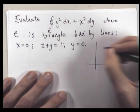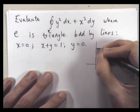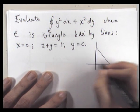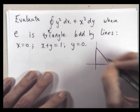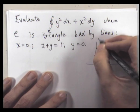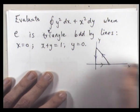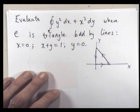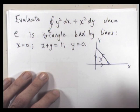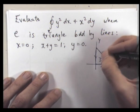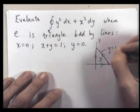So here we've got our triangle bounding our region. Okay, this is going to be the line y equals 1 minus x.